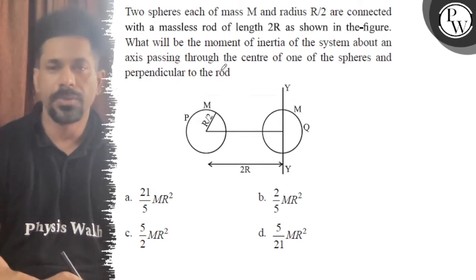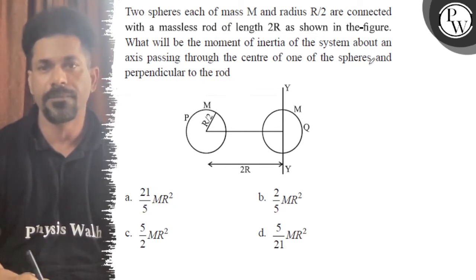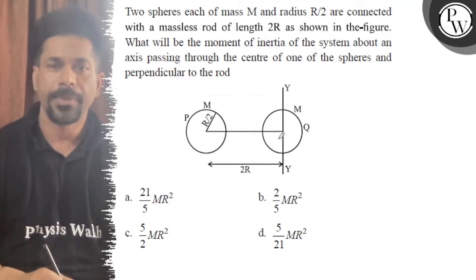of length 2R as shown in the figure. What will be the moment of inertia of the system about an axis passing through the center of one of the spheres and perpendicular to the rod?